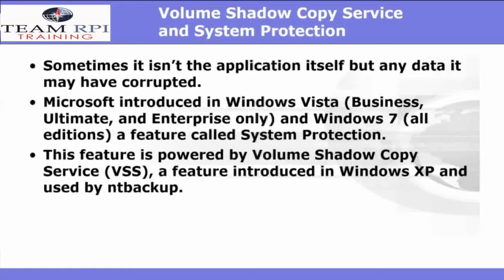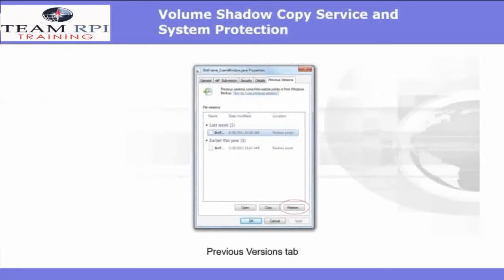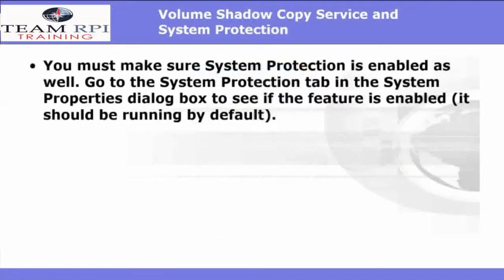And quite frankly, sometimes it's just the application itself. With Windows Vista and Windows 7, Microsoft introduced a feature called System Protection. This feature is powered by Volume Shadow Copy Services — a feature that was introduced in Windows XP and used with NetBackup. VSS enables the operating system to make backups of any file, even one currently in use. In Windows Vista and Windows 7, VSS is also used by System Protection, enabling access to previous versions of any data file or folder. However, to make use of this service, you first must make sure that System Protection is enabled. To do this, go to the System Protection tab in the System Properties dialog box — it should be running by default.